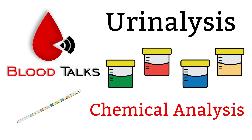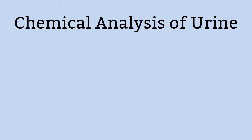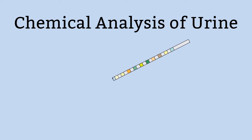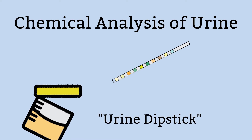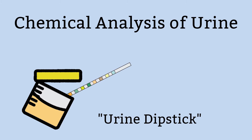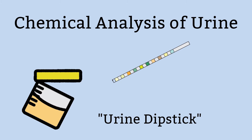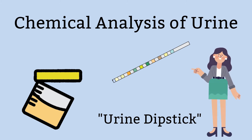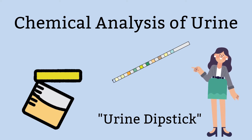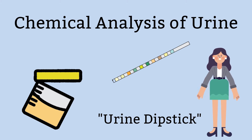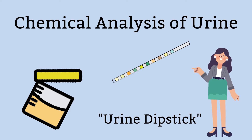Without further ado, let us get into it. The chemical portion of the urine analysis test is the bulk of this test. A dipstick test is a common term used to refer to the chemical portion of urine analysis. This is a reference to the action of submerging a testing strip into a urine sample. The testing strip has chemical pads on it, which is where the reactions take place. The test results are determined by the color changes of these pads. A standard urine test strip has up to 10 different chemical pads which change colors once it comes in contact with liquid, or urine in this case.